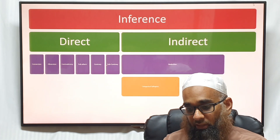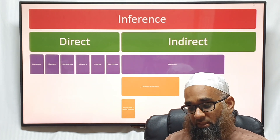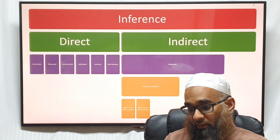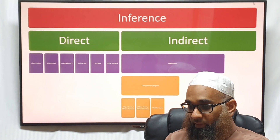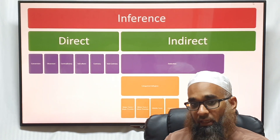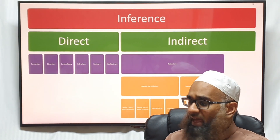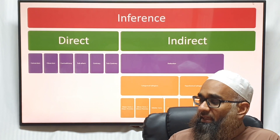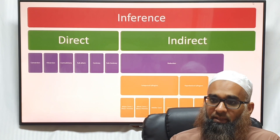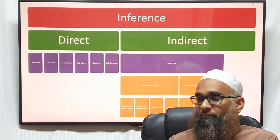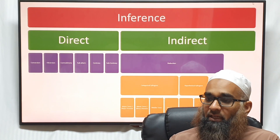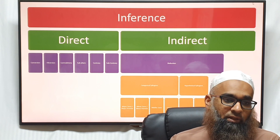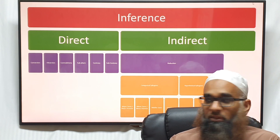We have deduction. We have categorical syllogisms which include the major term, the major premise, the minor term, the minor premise, the middle term, and the conclusion. We have hypothetical syllogisms — mixed hypothetical and pure hypothetical — where we discuss affirming the antecedent and denying the consequent. You can't deny the antecedent and affirm the consequent.